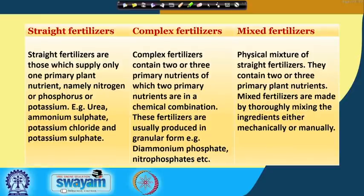These are called straight fertilizers because they supply only one primary element. Urea supplies only nitrogen; ammonium sulphate supplies only nitrogen; potassium chloride and potassium sulphate each supply only potassium.